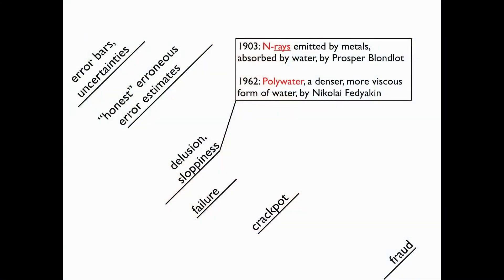There are two beautiful examples: n-rays, which were discovered at the time of the discovery of x-rays and microwaves — a whole bunch of new discoveries. This was yet another set of measurements which, unfortunately, could only be seen by French physicists — they were the only ones ever able to detect this radiation. Prosper Blondeau spent his life and reputation defending something that actually wasn't there. The same happened with Nicolai Fediakin, who discovered a new form of water called polywater — a denser, more viscous form — which also turned out to be just lab impurities. Nothing more fundamental than that.